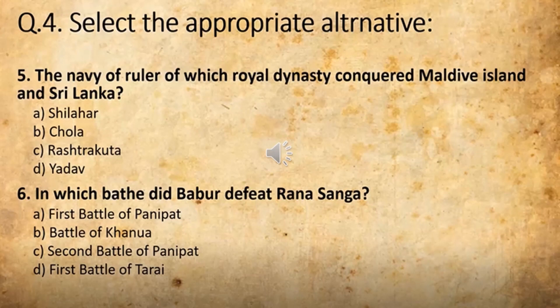Moving on to the fifth one. The navy of the ruler of which dynasty conquered the Malay Islands and Sri Lanka? The options on the screen and in your book are: Shilahar, Chola, Rashtrakuta, and Yadav. The correct answer is Chola.